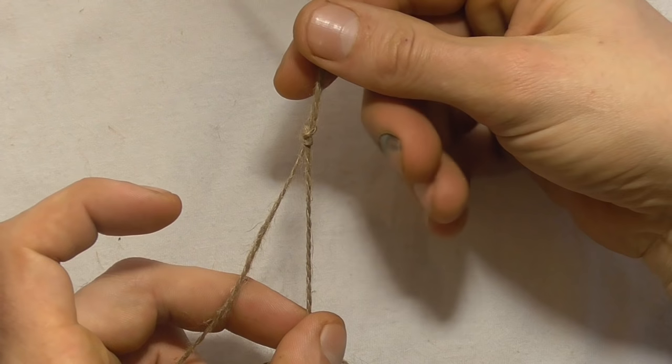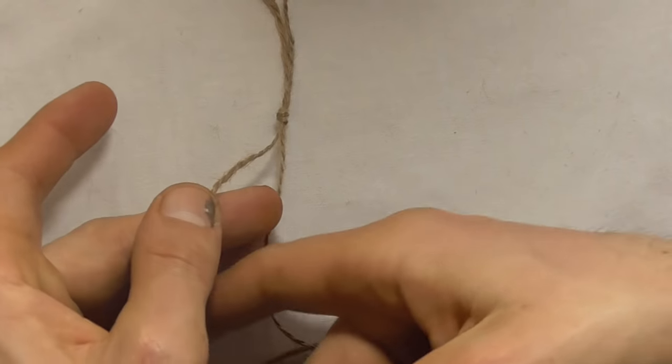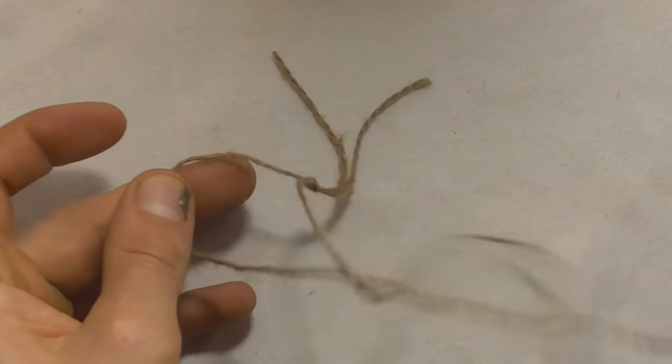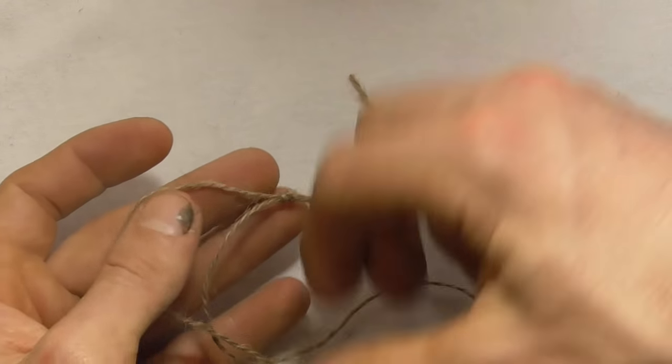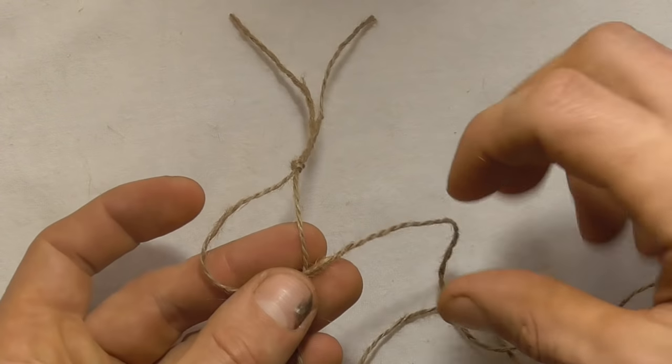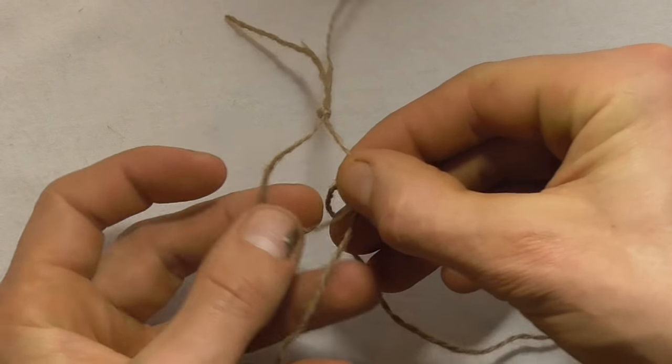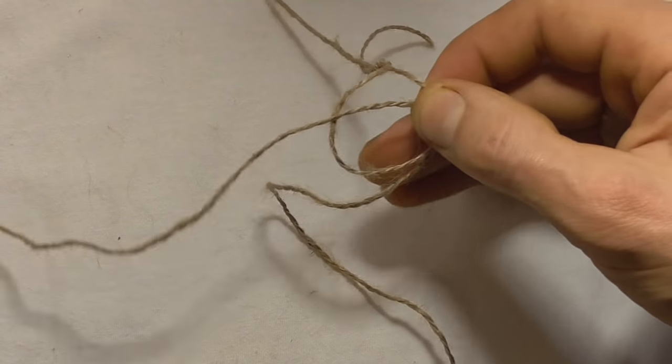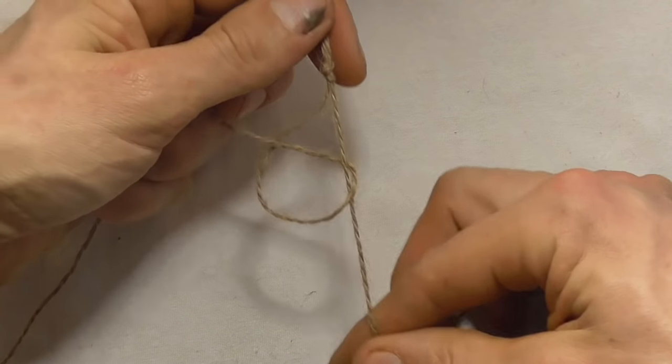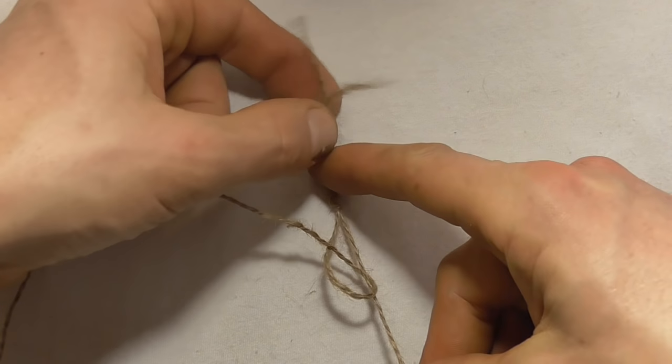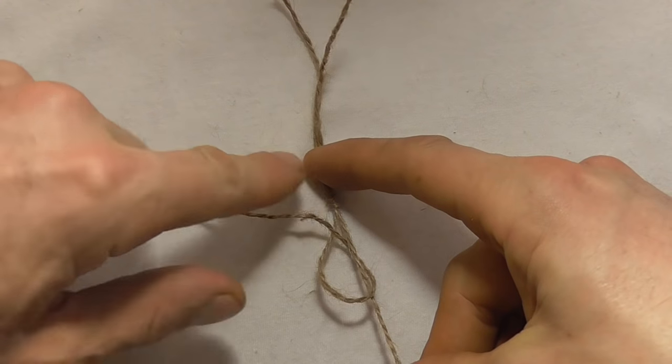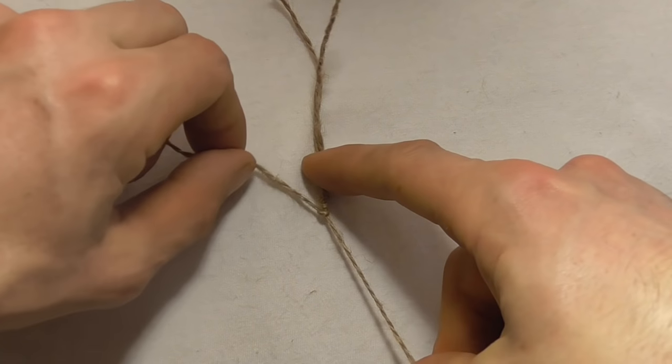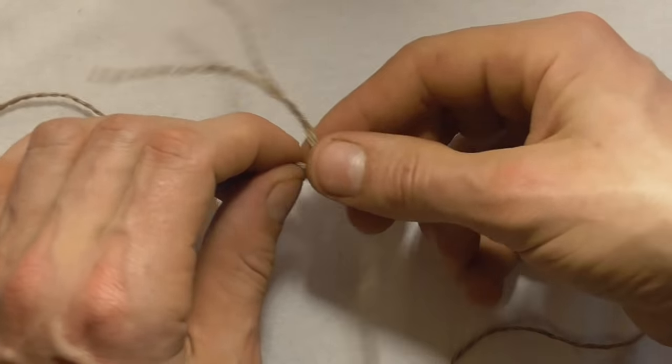Now we want to knot the long piece around the short piece. The short piece is on my right hand side and the long piece is on my left. I just want to come around like that and then back up through that loop. Pull it all the way through. Then to tighten it up, make sure the short piece stays vertical and tighten the next one up just by pulling it off to the side and upwards. That'll give us a nice spiral shape.